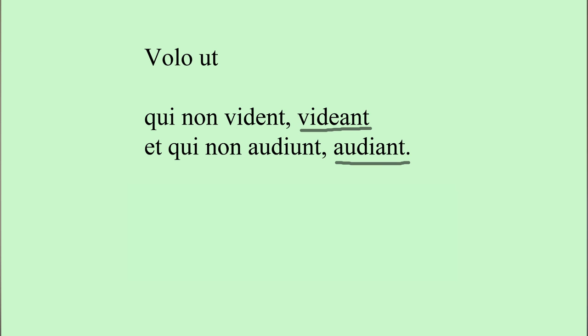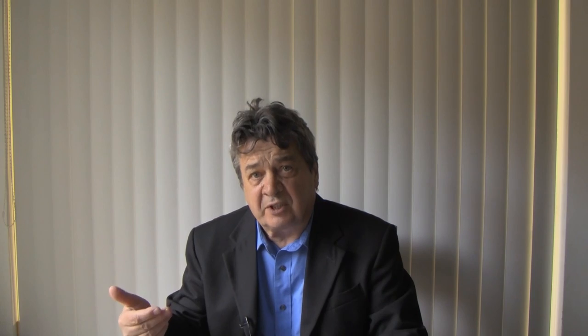Now let's look at the subjunctive — modus coniunctivus — for the four verbs: laudare, videre, dicere, and audire. The present tense indicative for videre is: video, vides, videt, videmus, videtis, vident. For dicere, the present tense indicative is: dico, dicis, dicit, dicimus, dicitis, dicunt. And the coniunctivus is: dicam, dicas, dicat, dicamus, dicatis, dicant.